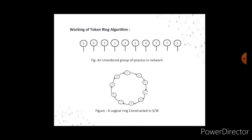In the working of the token ring algorithm, consider an unordered group of processes in a network with a logical ring constructed in software. When the ring is initialized, process 0 is given the token. The token circulates around the ring, passing from process K to process K+1 modulo the ring size in point-to-point messages. When a process acquires the token from its neighbor, it checks whether it wants to enter a critical region. If so, it enters the region, does all the work needed, and leaves the region. After exiting, it passes the token along the ring. A process is not permitted to enter a second critical region using the same token.